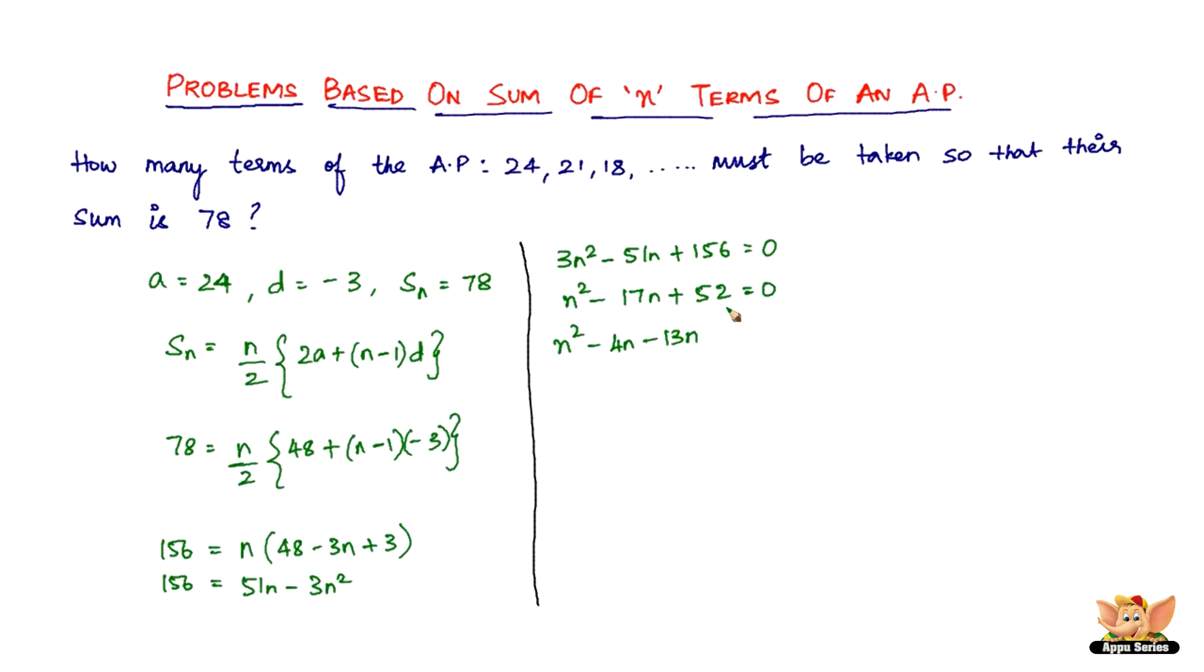So grouping now, take out n, you have n minus 4, and you take out 13 here, you've got n minus 4 again. Considering these two terms, take out n minus 4 outside, all you're left with is n minus 13 equals 0. So n minus 4 equals 0 or n minus 13 equals 0, so n is 4 or n is 13.